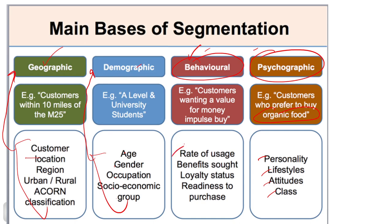Behavioral segmentation factors include rate of usage, loyalty status, readiness to purchase, and benefit sought. For example, I know I will use that milk to make tea — that is my behavior. Dividing the milk market according to consumption: families consuming less than 1 liter a day, 1 to 2 liters, 2 to 4 liters, or above 4 liters — that is how you can divide the market and run targeted marketing campaigns.